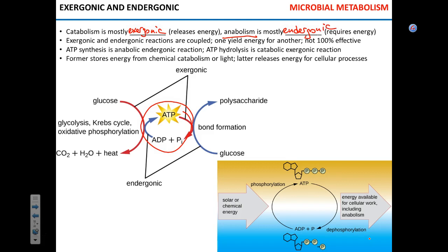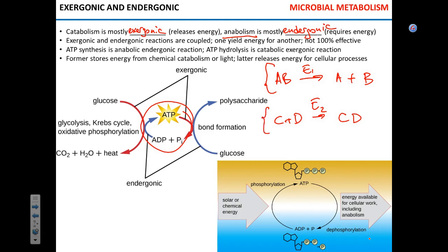Reactions of synthesis — anabolic reactions — are mostly endergonic, so they require energy. Consider a catabolic reaction producing energy E1 and an adjacent anabolic reaction using energy E2. If the catabolic provides energy for the anabolic, are E1 and E2 going to be equal, or will one be greater?